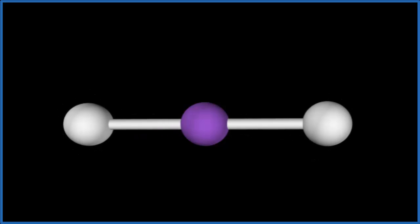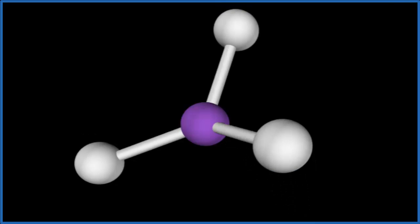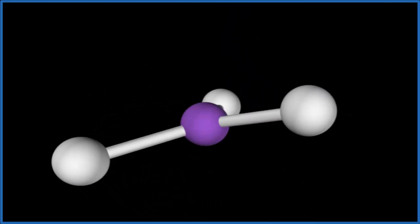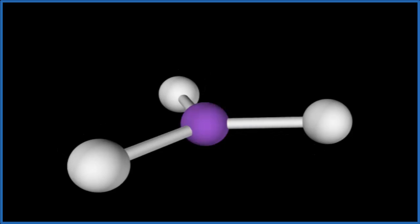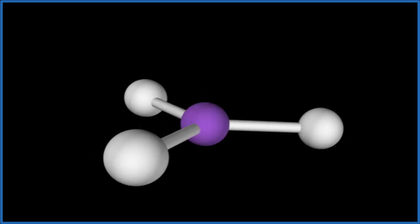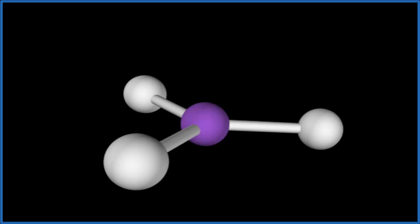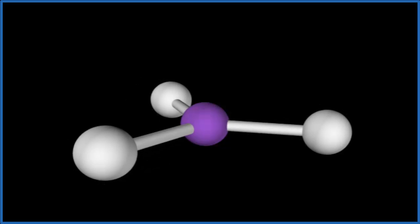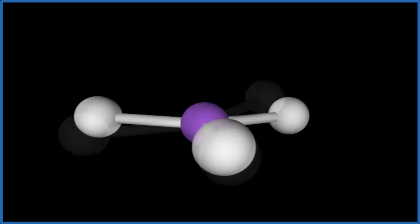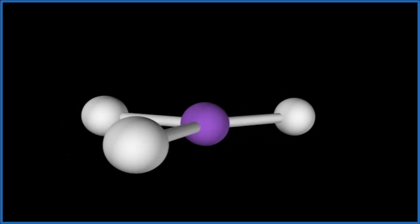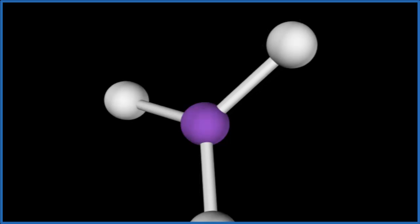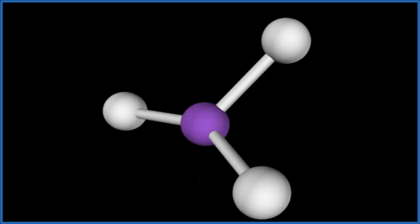We add that third one, and we end up with this molecular geometry that we call trigonal planar — it's all in a plane. And because it's all in a plane, you can imagine each one of these chlorine atoms is pulling in an opposite direction. Because of that, they all cancel out, so there really is no net difference in electronegativity for the whole molecule — it's uniform because of this trigonal planar geometry.